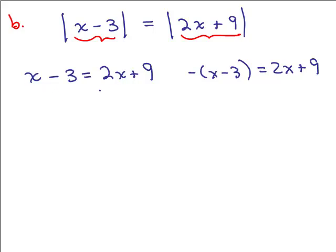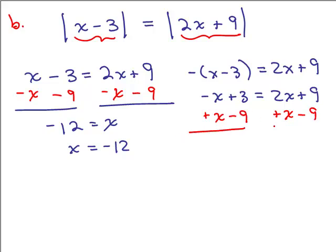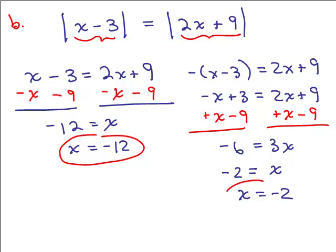Now we're going to solve for x. I'm going to put the x on the right-hand side — subtract x from both sides and subtract 9 from both sides — so I have negative 12 equals x, or x equals negative 12. Now let's solve the other equation: negative x plus 3 equals 2x plus 9. Add x to both sides and subtract 9: I have negative 6 equals 3x. Divide both sides by 3 to get x equals negative 2. Those are our solutions, but we want to check each of them.